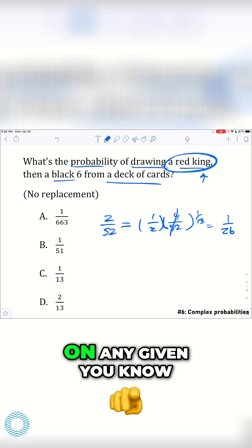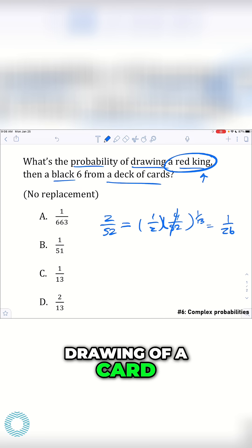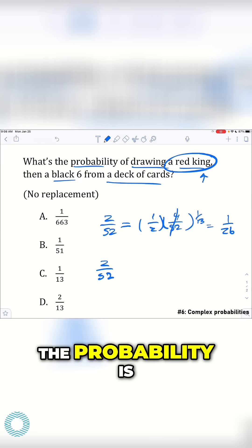That's your chance of getting a red king on any given drawing of a card. The black 6, that's also going to be 2 out of 52 if you know what the probability is.